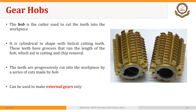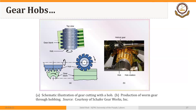Here is an example of a gear hob. You could see the cutting teeth on the periphery of the cutter. Generally, it doesn't have cutting teeth on the face. How gears are actually made is that both the cutter and the blank rotate. Depending upon the angle required on the blank, we hold the hobbing cutter at that angle.